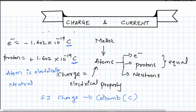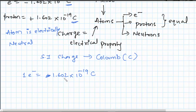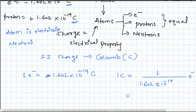Coulomb is a very, very large unit. The charge on one electron is 1.602 × 10⁻¹⁹ coulombs. By unitary mathematics, one coulomb contains 1 / (1.602 × 10⁻¹⁹) electrons, which works out to 6.24 × 10¹⁸ electrons. So 1 coulomb contains that many electrons — it is a really large unit.